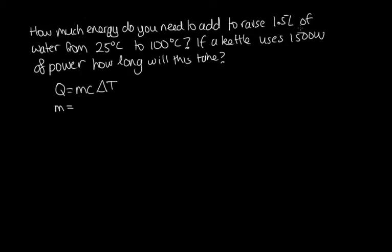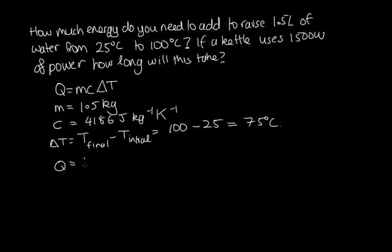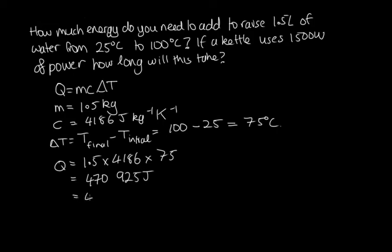The mass: we've got 1.5 liters of water. Now 1 liter of water weighs 1,000 grams, so this is 1.5 kilograms of water. The specific heat for water is 4,186 joules per kilogram per Kelvin. The change in temperature is equal to the final temperature minus the initial temperature, which is 100 degrees C minus 25 degrees C, giving us 75 degrees C. So the amount of heat we need to add is 1.5 times 4,186 times 75, which gives us 470,925 joules, or 471 kilojoules.